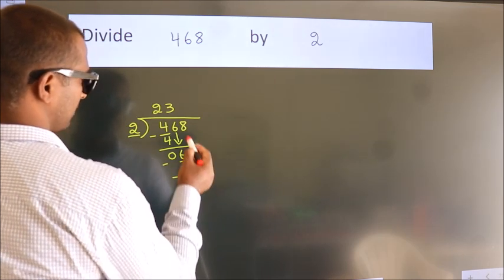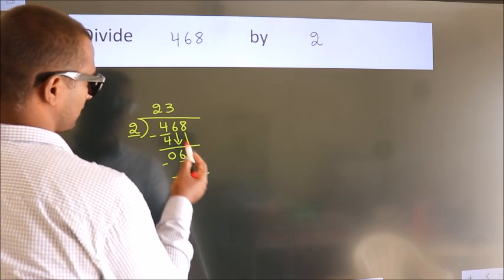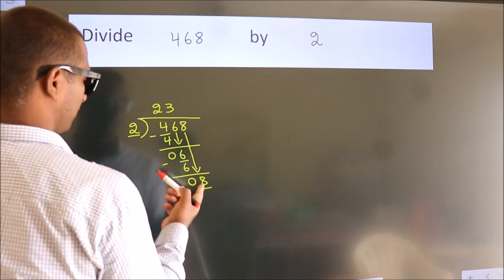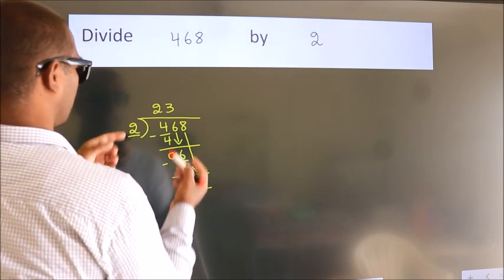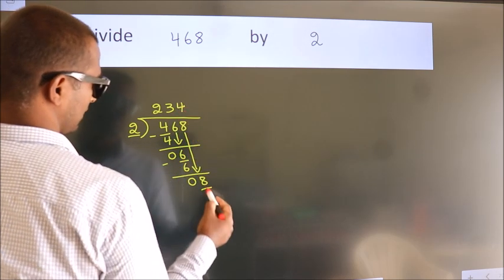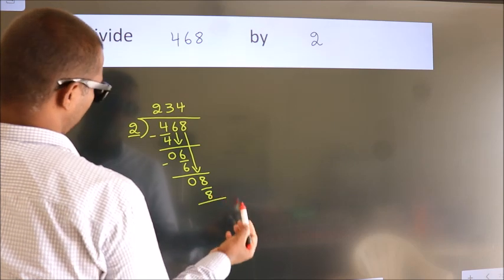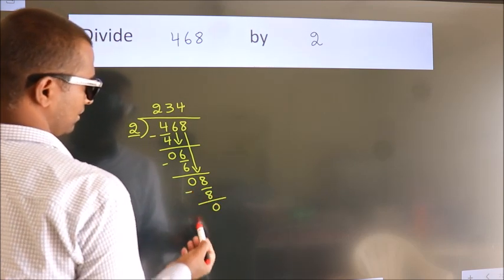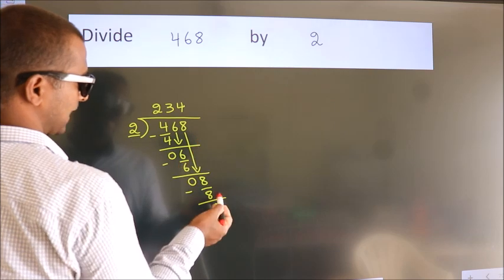After this, bring down the beside number. So 8 down. So 8. When do we get 8? In the 2 table. 2 times 4 is 8. Now we subtract. We get 0. No more numbers to bring down.